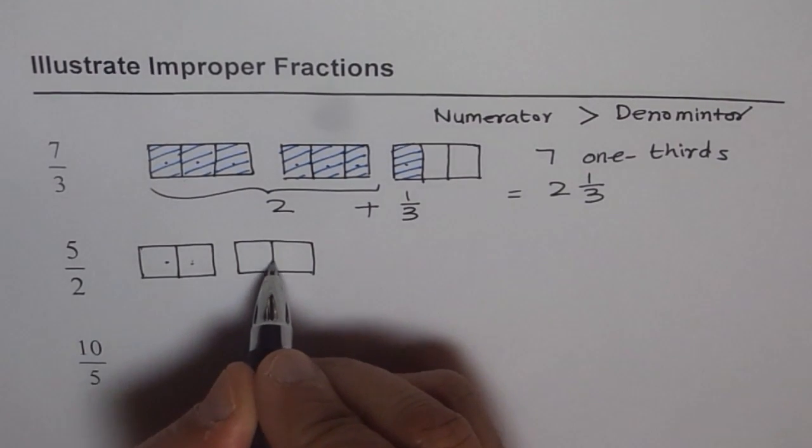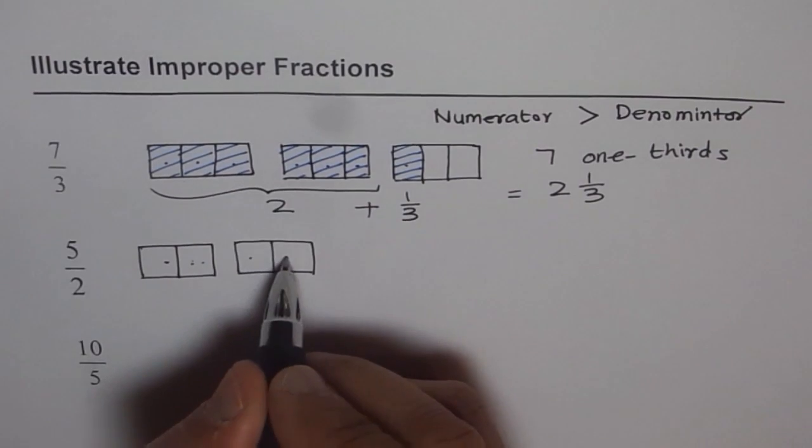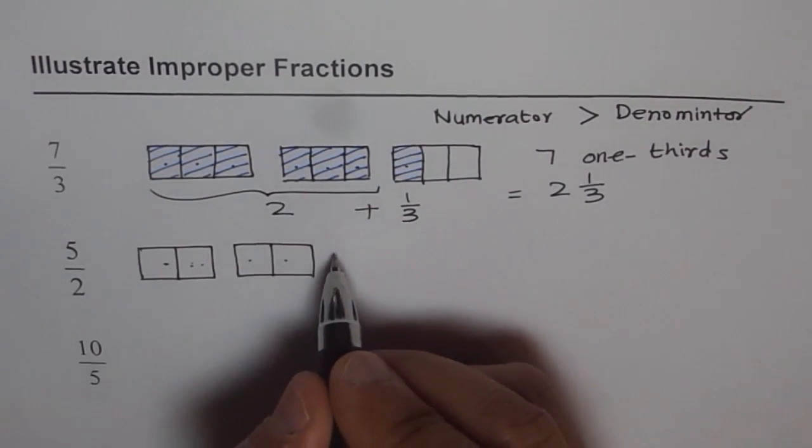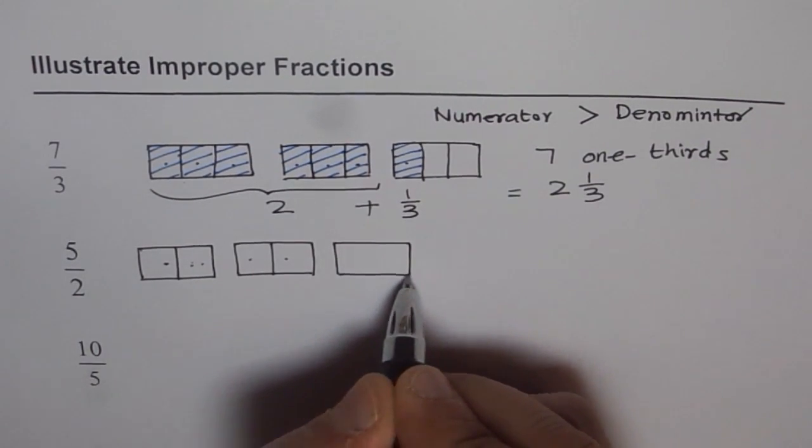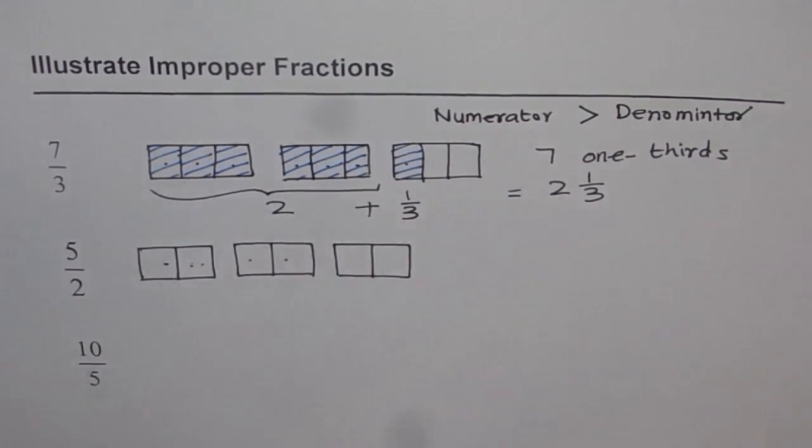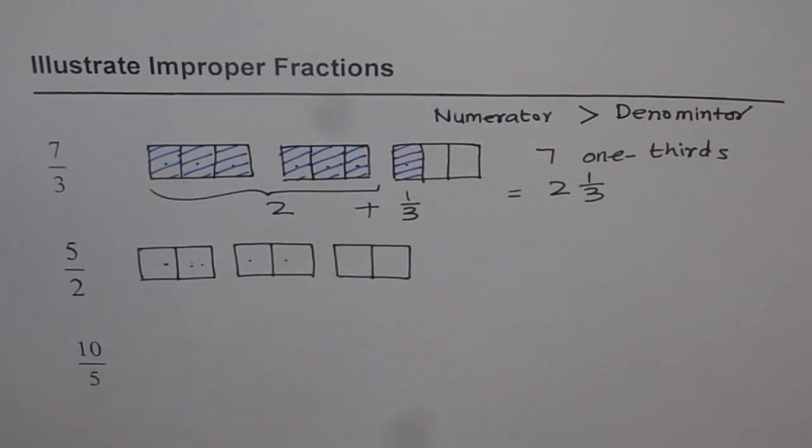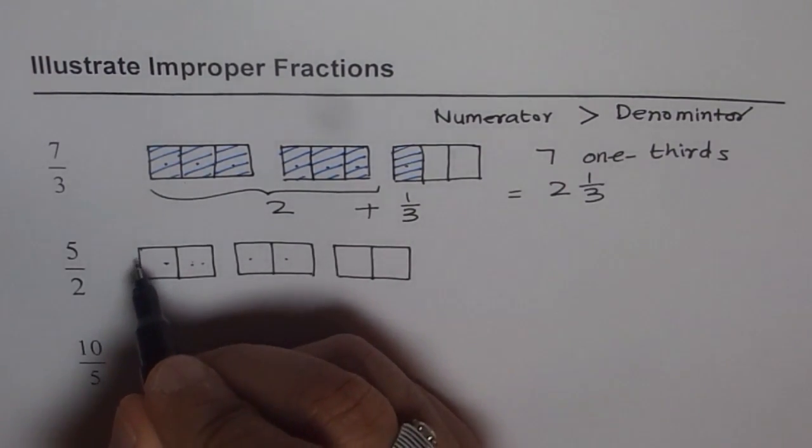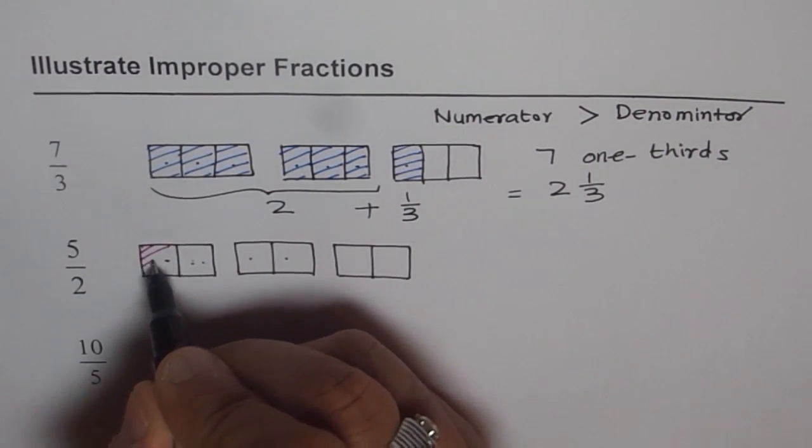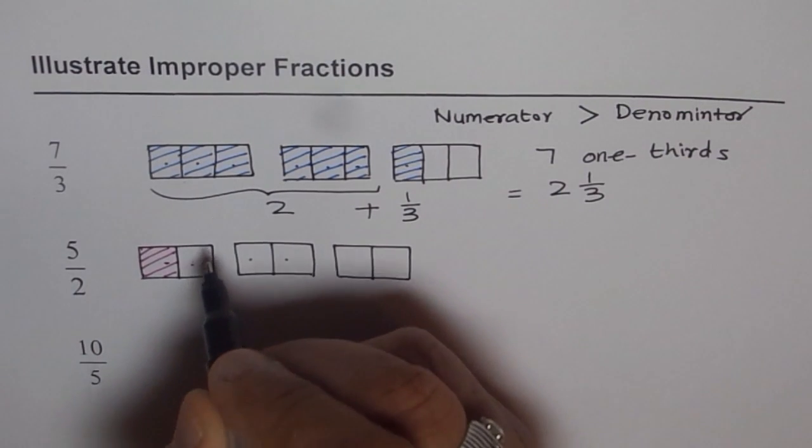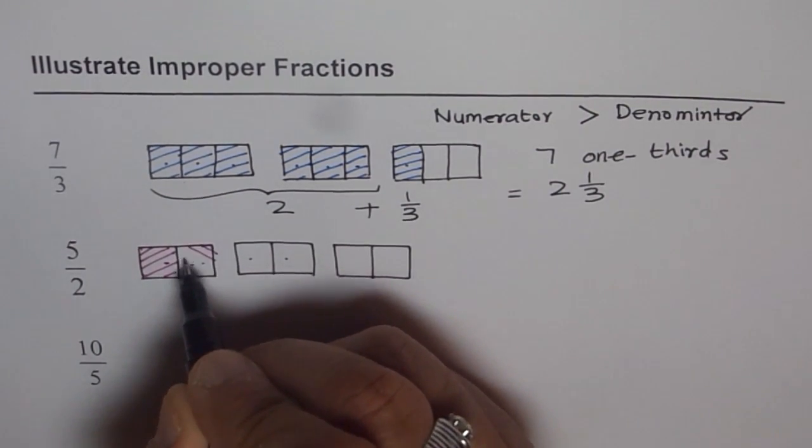Will that be sufficient? 1, 2, 3, 4. No, I need 5. That means 1 more, right? So let me draw 1 more and divide it into 2 equal halves. Now, in this case, let's color. So you got 5 halves. So 1 half, that is 1 half. And then I got 2 halves, right?